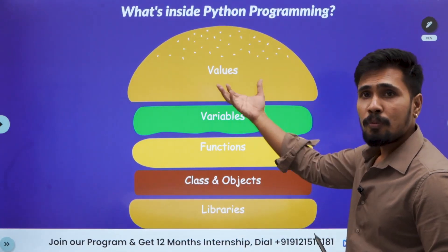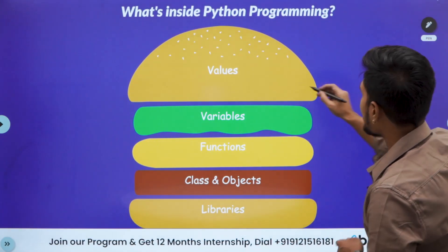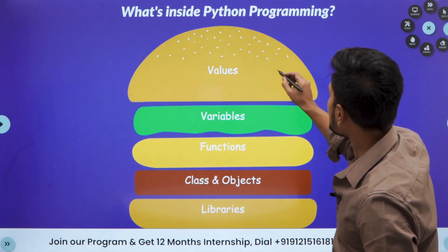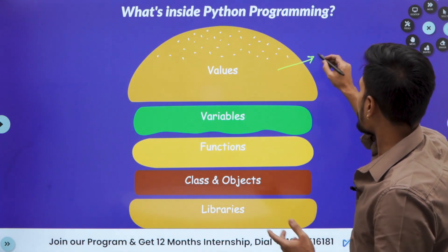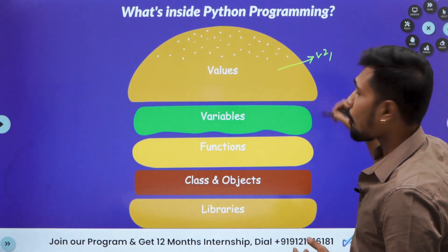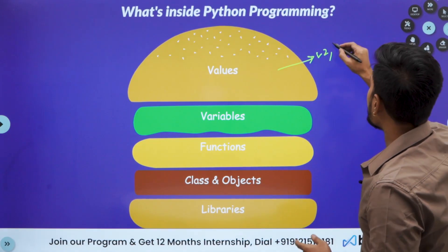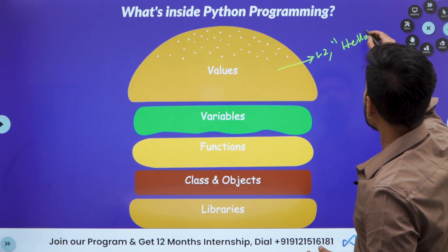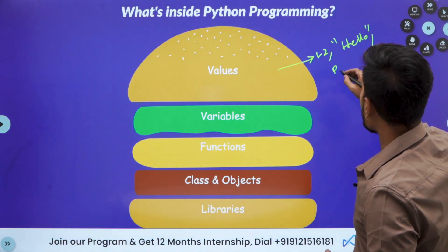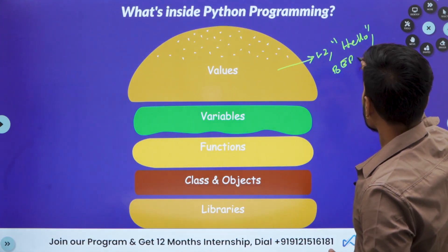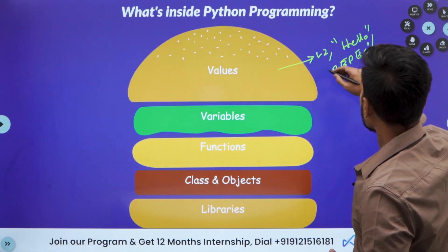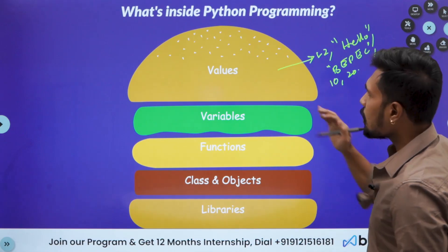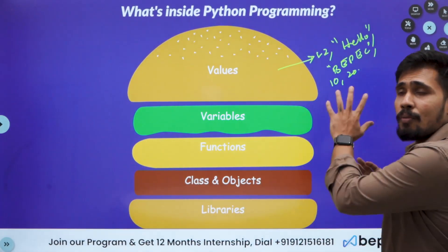So how is a variable made? The sequence order is like this. Values — what exactly is meant by a value? Anything like 1.2, or 'hello', or 'BPEC', or 10, or 20 — all of these are going to be called your values.